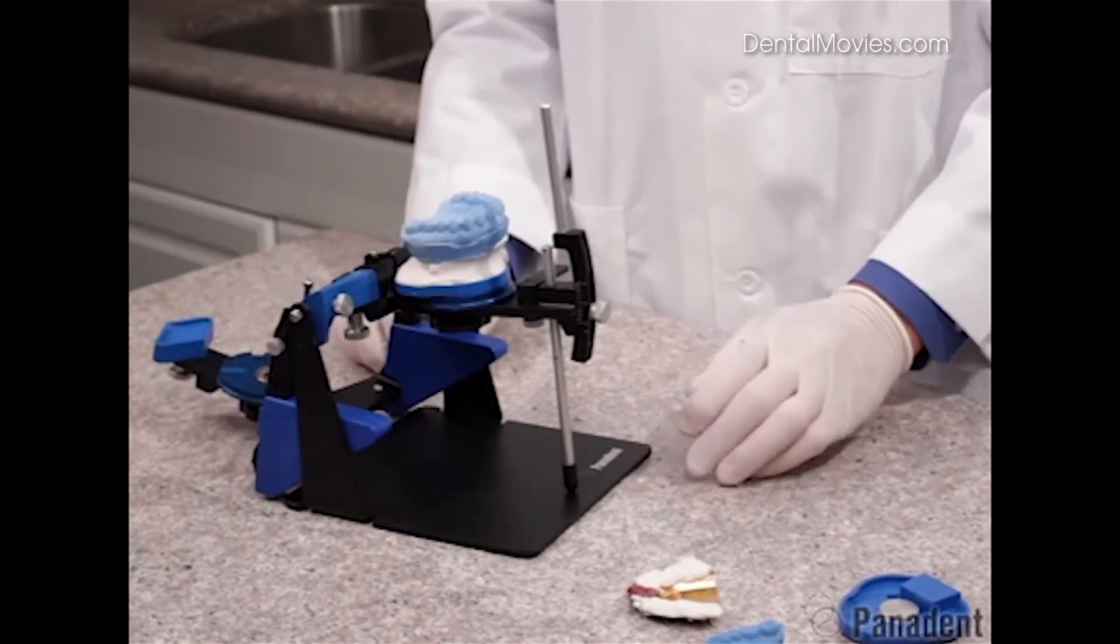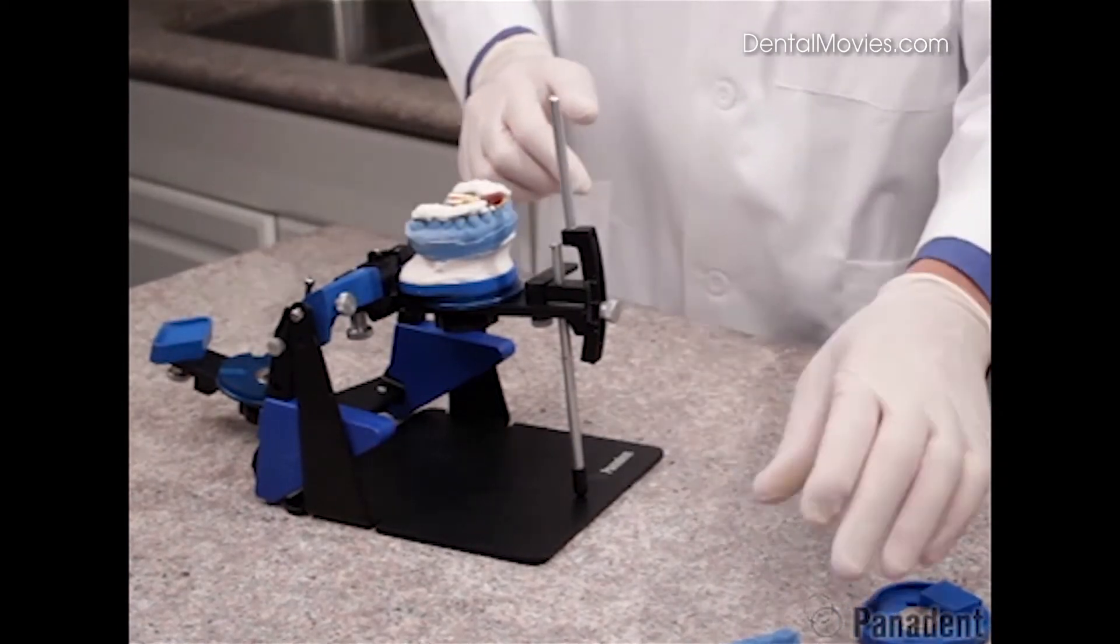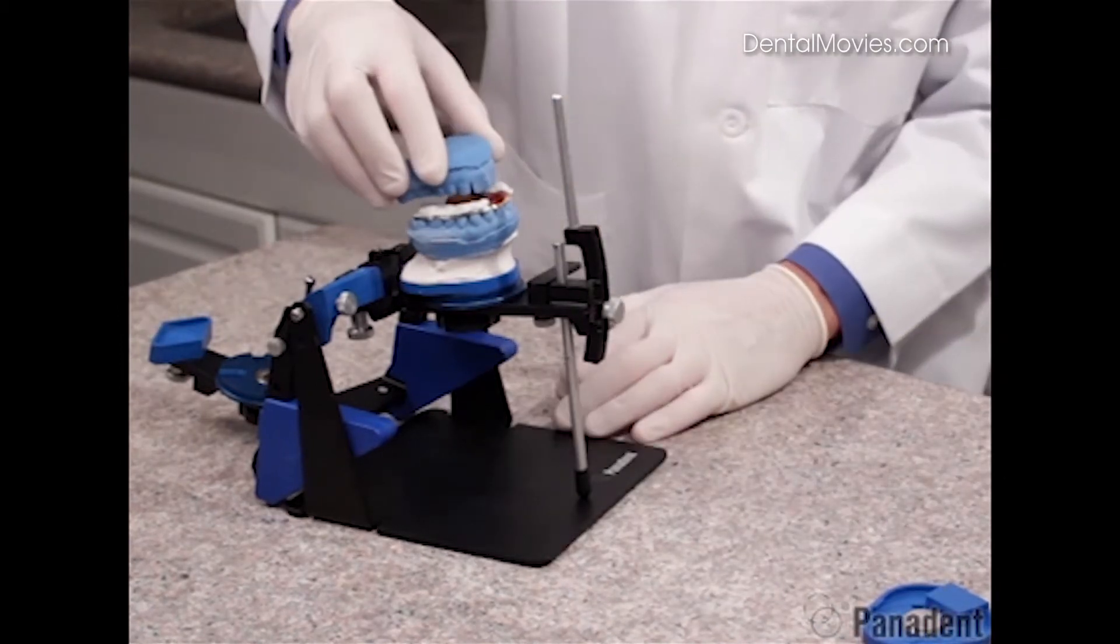And then rotate the lower frame back in preparation for adding the centric relation record to our maxillary cast. Then we can add our mandibular cast into the interocclusal record.